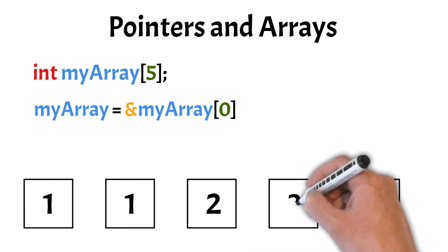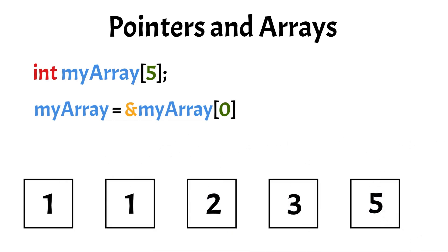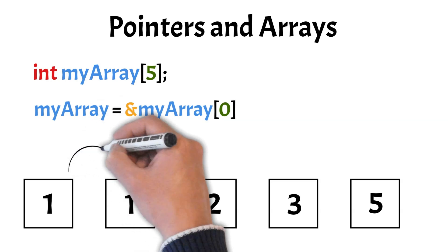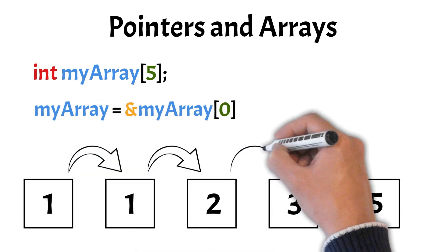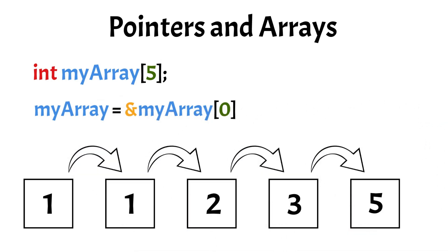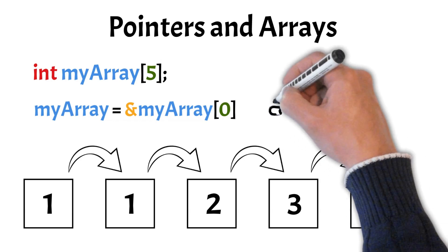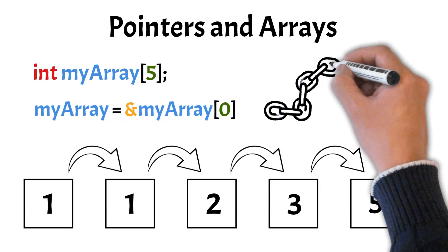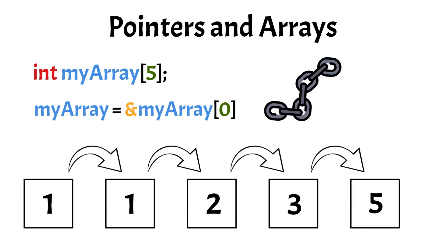For example, if you have an array named MyArray, its name is equivalent to the address of the first element. Pointers allow you to perform arithmetic operations to move through the array elements, such as incrementing the pointer to access subsequent elements. This relationship makes pointers ideal for functions that need to process arrays, as passing a pointer to the array is more efficient than passing the entire array.